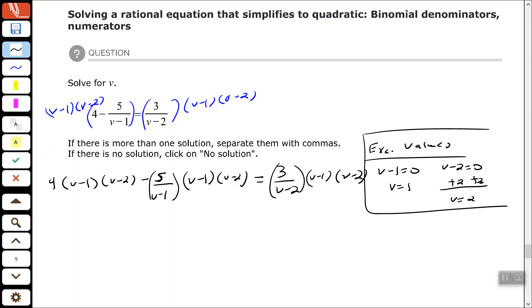Let's clean this up now. So this first part, the 4 times V minus 1 times V minus 2, I'm going to start multiplying those two binomials out. Using our distributive property, V times V is V squared, V times negative 2 is negative 2V, negative 1 times V is negative 1V, and negative 1 times negative 2 is positive 2.